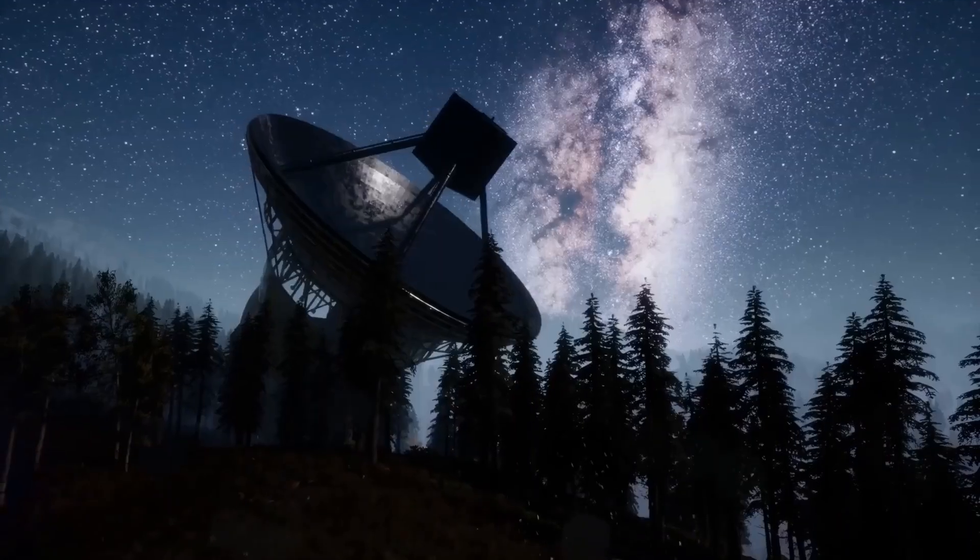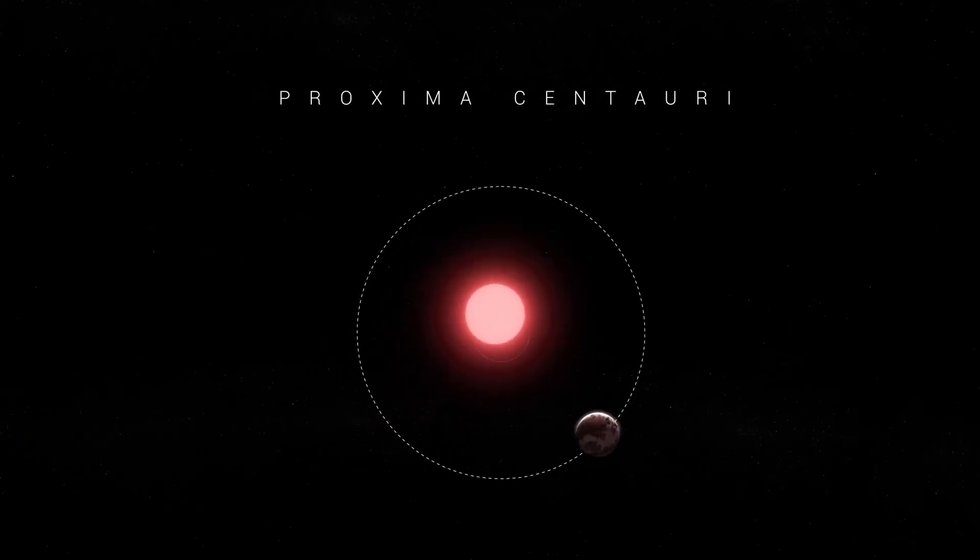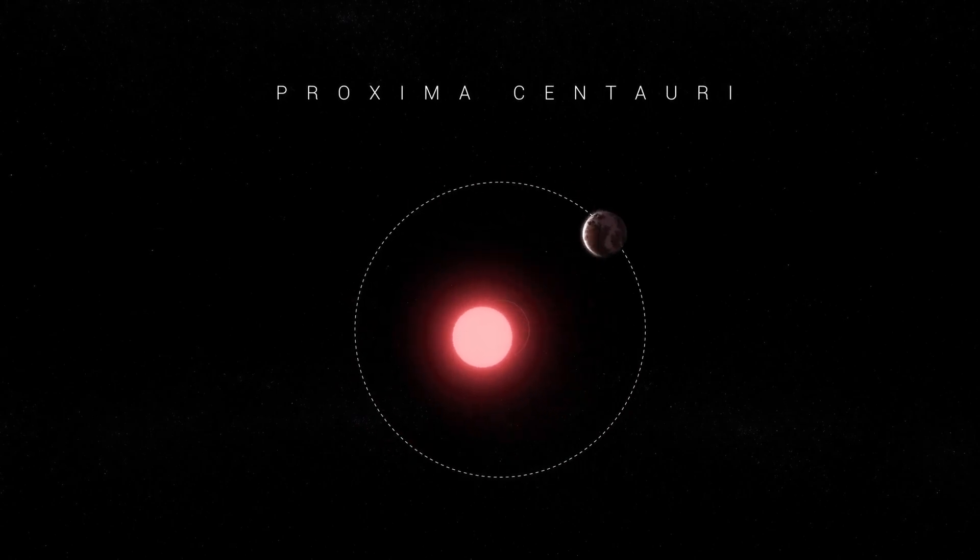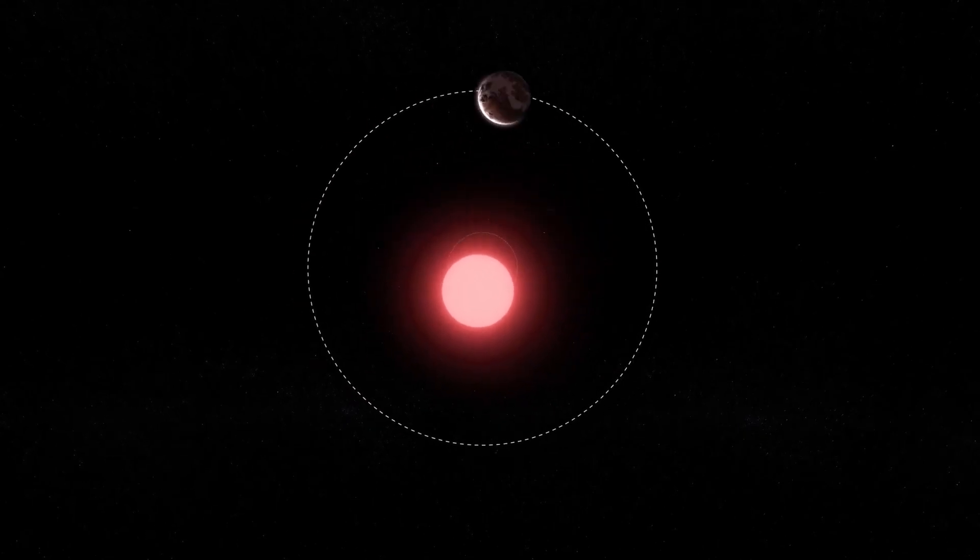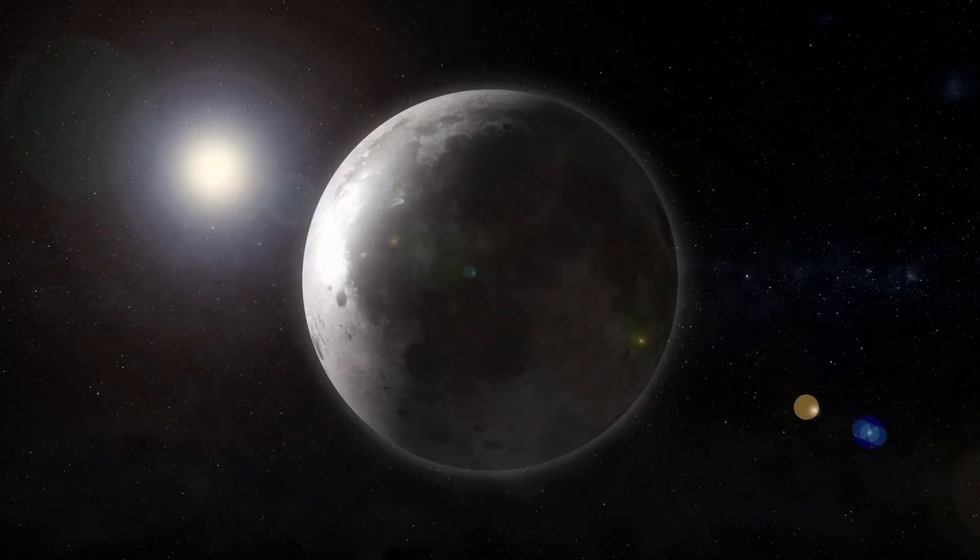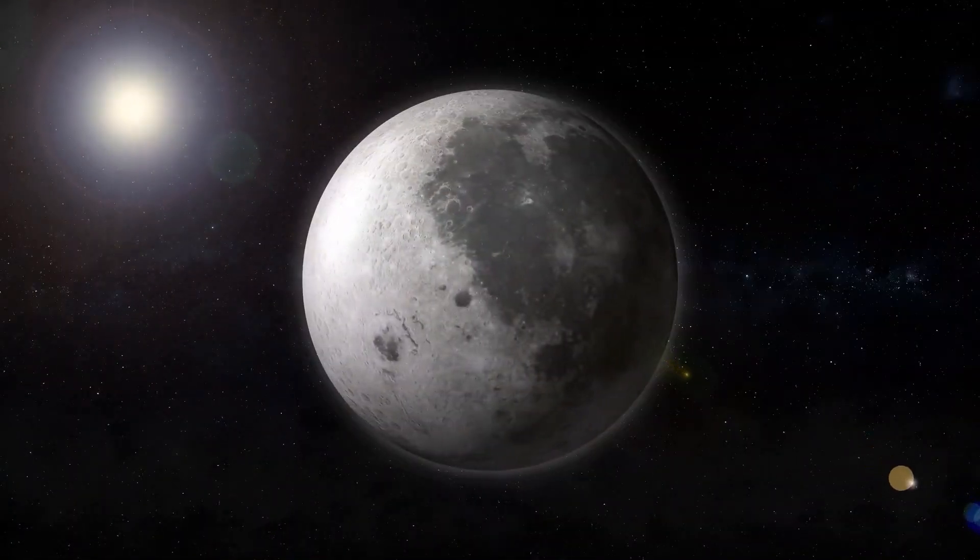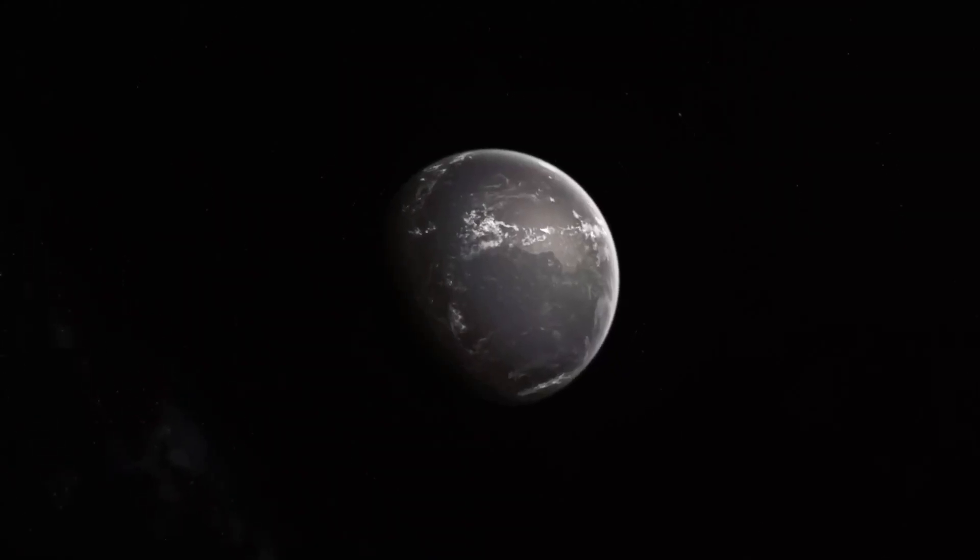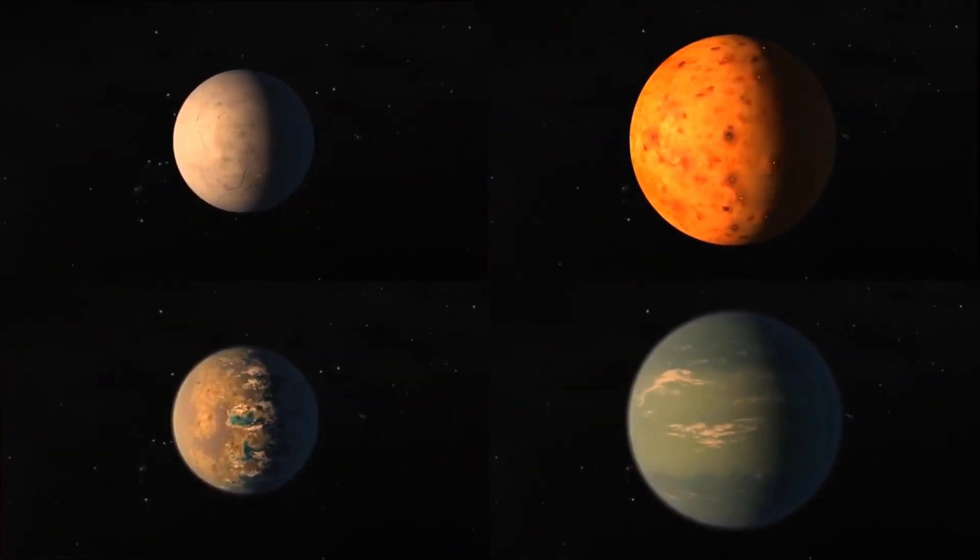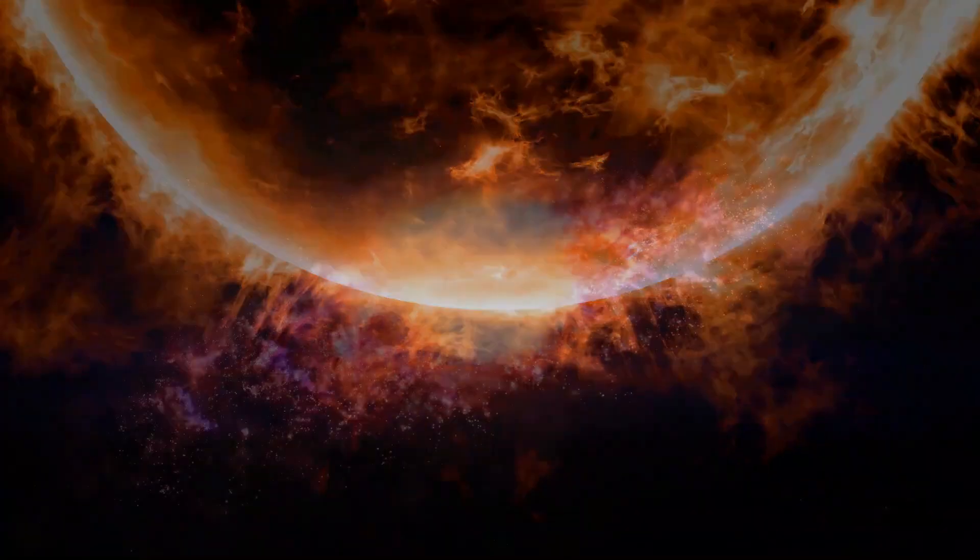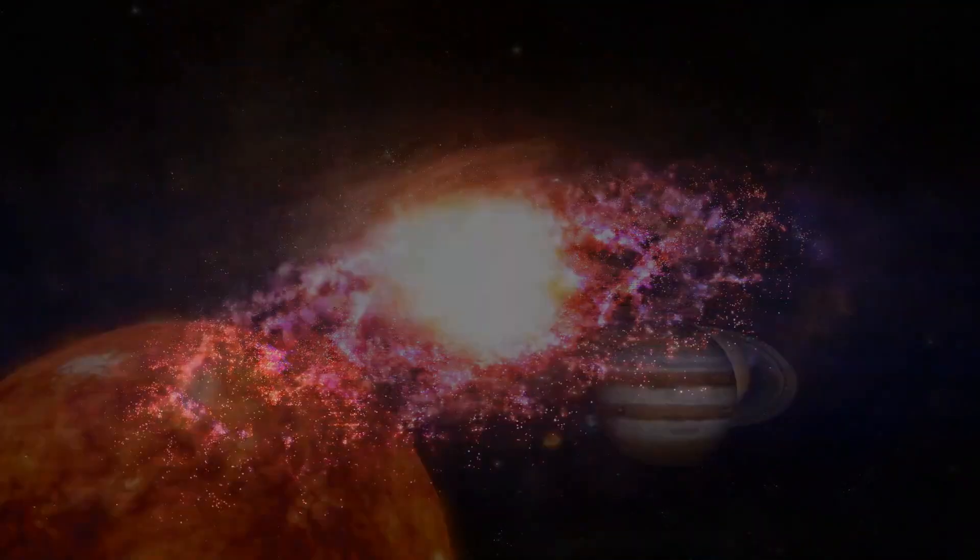Last January, another research team announced their finding of another possible planet orbiting Proxima Centauri, Proxima Centauri c. This one is also still just a candidate at this point, but if real, it is about six times as massive as Earth. This would make it a super-Earth, planets that are significantly larger and more massive than Earth but smaller and less massive than Neptune. It is estimated to orbit the star every 5.2 years. If both of the new candidates were to be confirmed, that would mean Proxima Centauri would have at least three planets orbiting it.